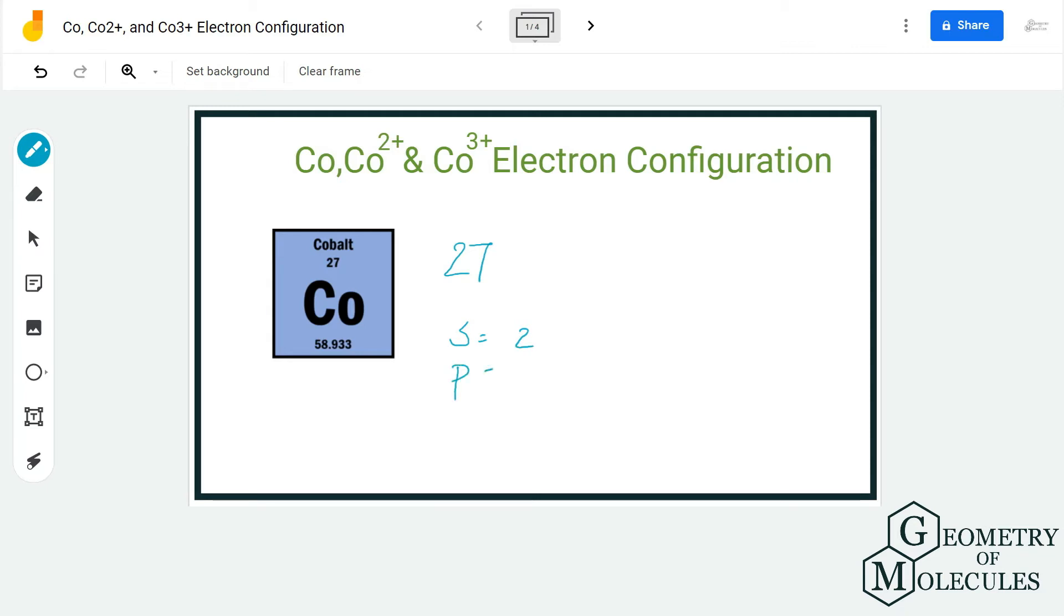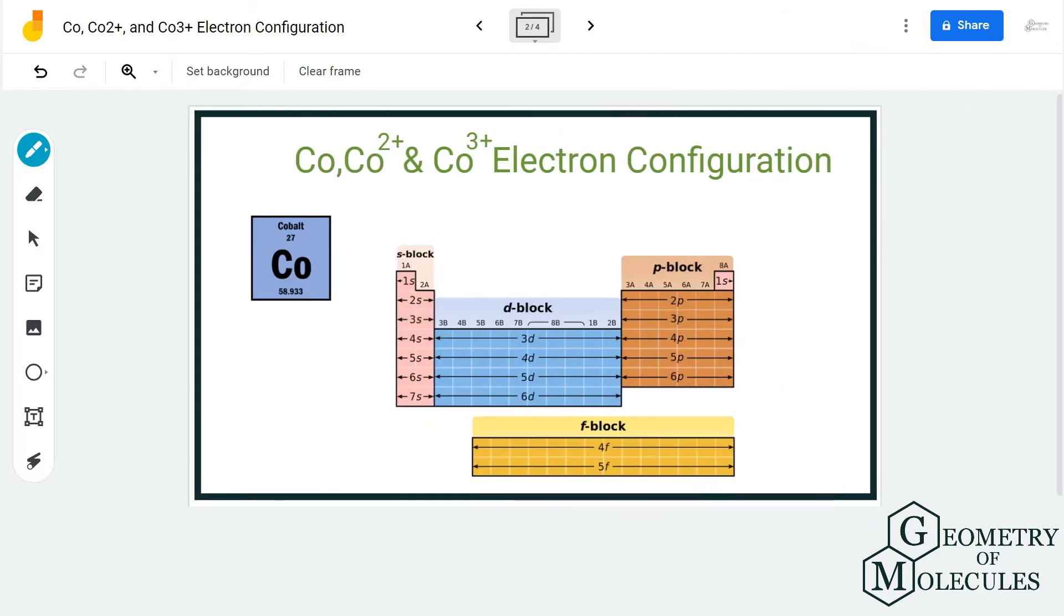We start with 1s² 2s² 2p⁶, which gives us 10 electrons. Let's proceed: 3s² adds two more for 12 electrons, then 3p⁶ brings us to 18 electrons.